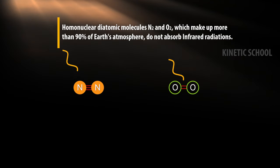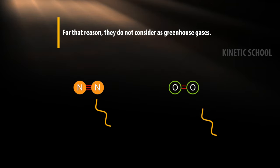Homonuclear diatomic molecules, nitrogen and oxygen, which make up more than 90% of earth's atmosphere, do not absorb infrared radiations. For that reason, they are not considered greenhouse gases.